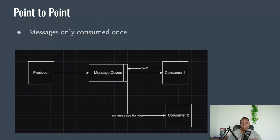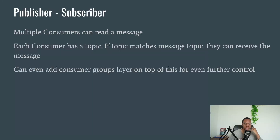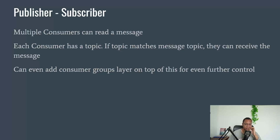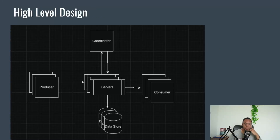There are two schemas. There is point-to-point, where we only consume it once. When somebody consumes a message, we say ACK - it sends back ACK, and then we know the message was received. Then we can talk about publisher-subscriber, where you can add in topics and consumer groups. These are going to allow you to control who has access to what kind of message.